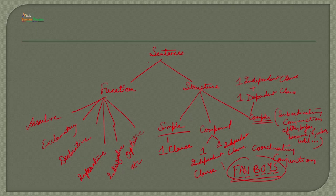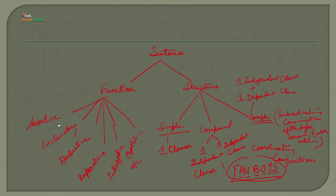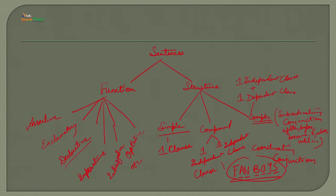On the basis of function: assertive gives information; exclamatory expresses emotion — for example, 'Oh, you are looking beautiful!'; declarative makes a statement; imperative gives an order or command — 'Open the door,' 'Shut the door'; interrogative raises a question; optative expresses a wish — 'May God bless you.' These are the types of sentences on the basis of function and structural category.